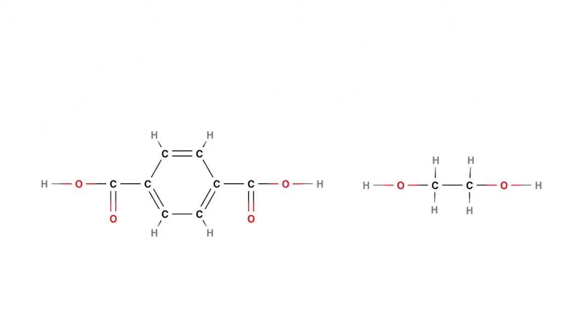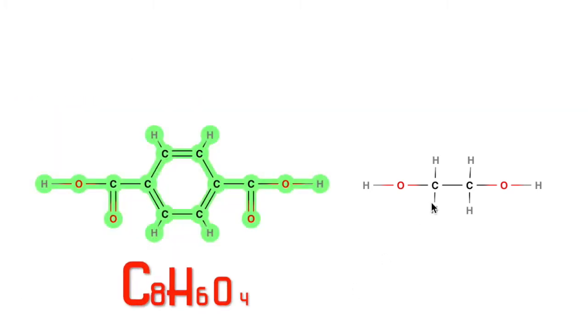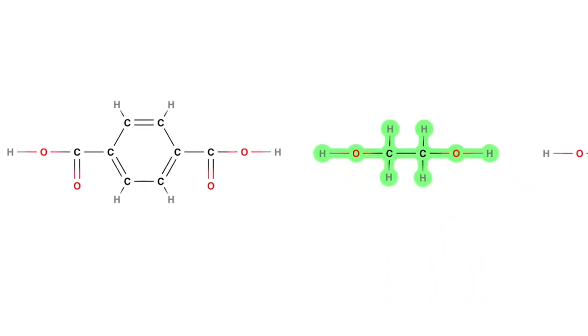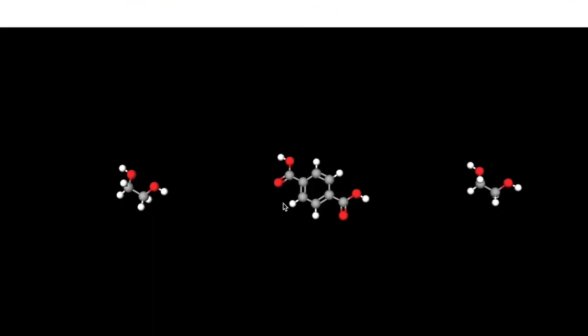Polyethylene terephthalate or PET for short is a condensation polymer made from the monomers terephthalic acid and ethylene glycol. The 3D ball and stick models illustrate the structure of these molecules.